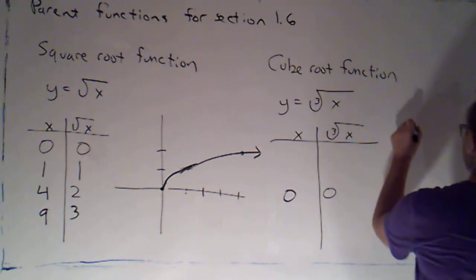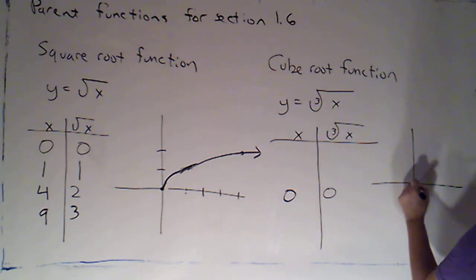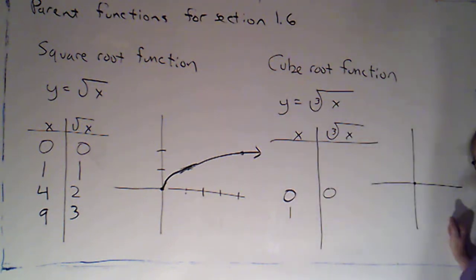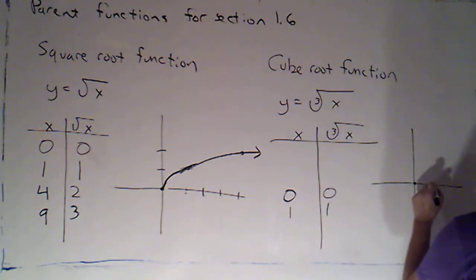I'm going to start with 0 and the positives, and then I'll go back and fill in a couple of negative choices. Cube root of 0 is just 0. So the origin, once again, is going to be on this graph. Now, 1 works out nicely because the cube root of 1 is just 1, so I can plot that point (1, 1).